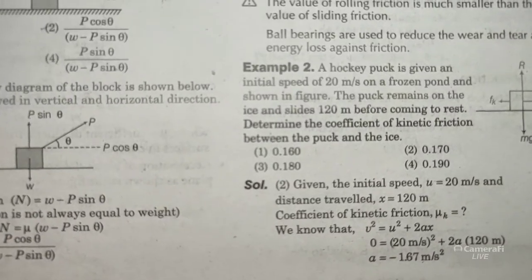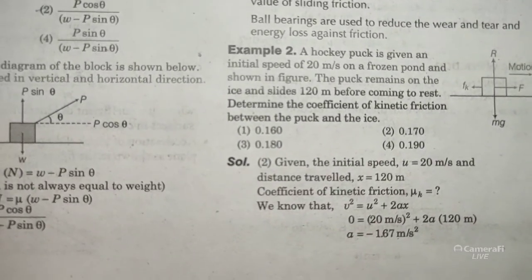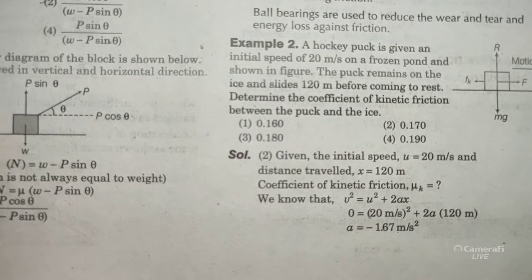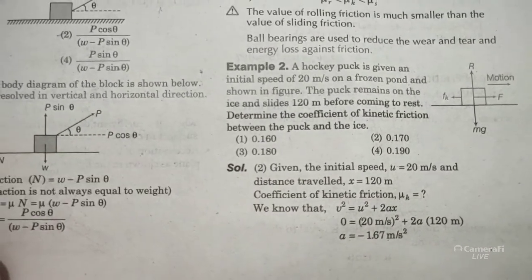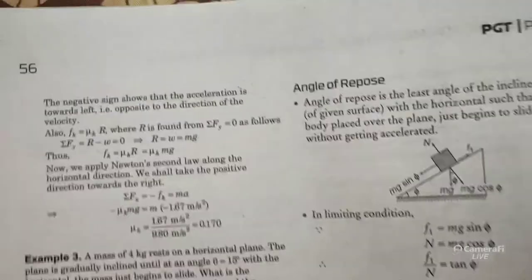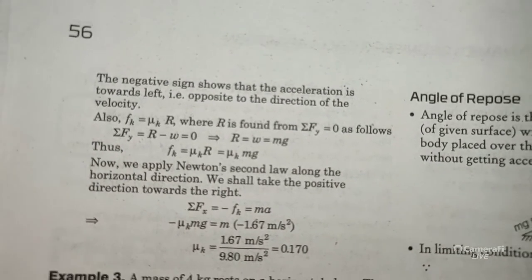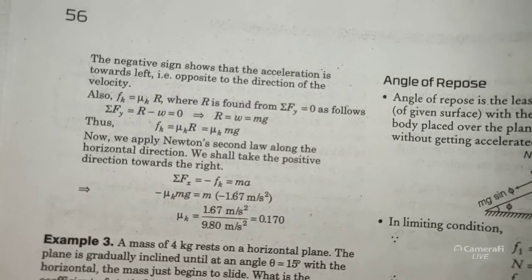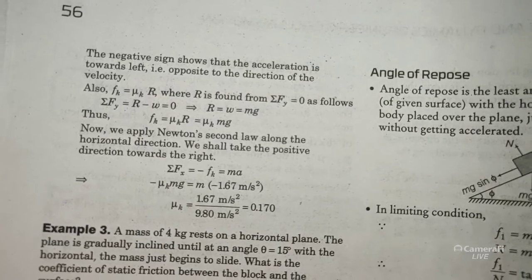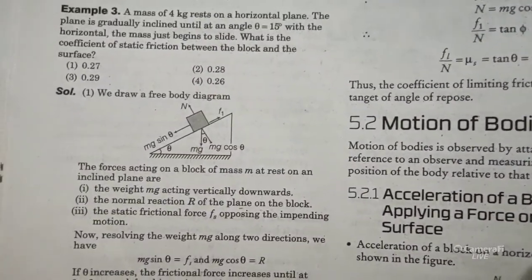So a = −1.67 m/s² — the negative sign means it is in the opposing direction. The normal reaction R equals mg for a horizontal surface. We need to find μk = fk/R. Since fk = μk × R = μk × mg, and fk also equals m × a (magnitude), the mass cancels from both sides. Therefore μk = a/g, giving the coefficient of kinetic friction.